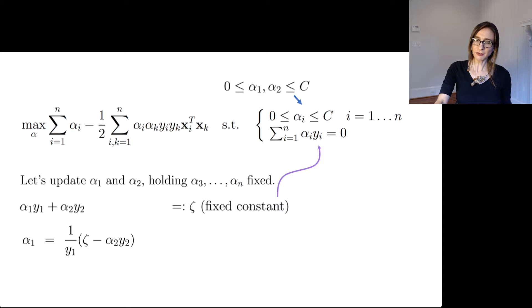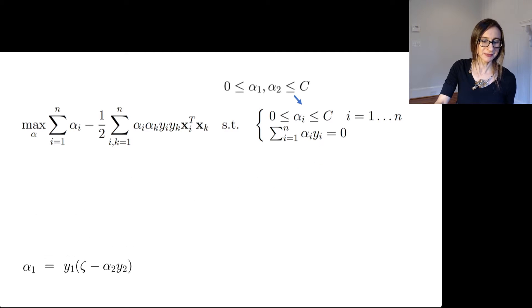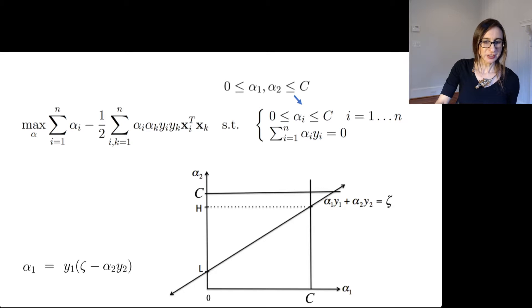Now I can solve for alpha 1 as a function of alpha 2. And as you can see, this is a line. So again, I did this very tiny little check, which was to know that y1 is either plus 1 or minus 1, so 1 over y1 is the same as y1. So there's my line.